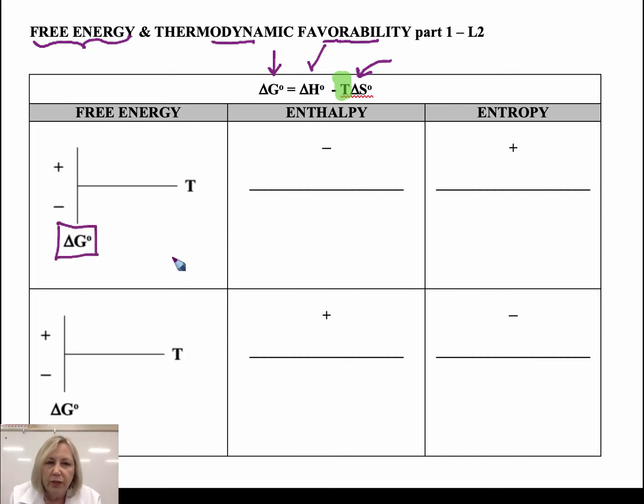Okay, so what we're going to be doing is graphing delta G on our y-axis and temperature on the x-axis. It's just a very qualitative picture of what's going on in a system.